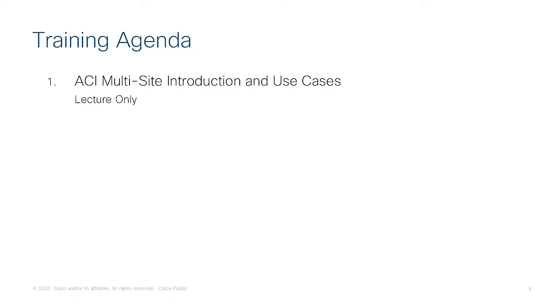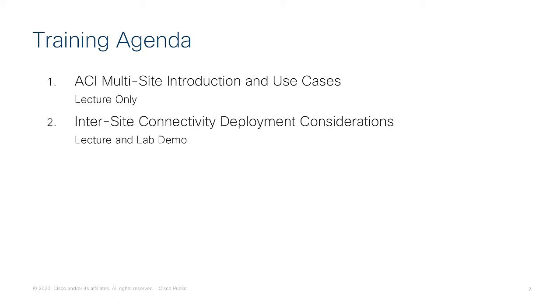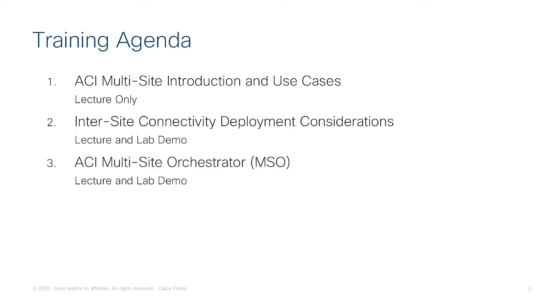This training has been divided into different modules. In the first one we'll introduce the ACI multi-site architecture with its main use cases. In the second one we will discuss the deployment considerations for the network used to interconnect the different ACI fabrics, which usually takes the name of inter-site network. In the third module we introduce the multi-site orchestrator, also referred to as MSO, which is the main actor in the ACI multi-site architecture and is used to provision the tenant policies.